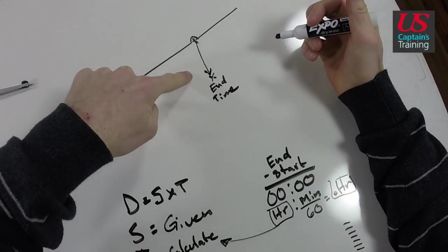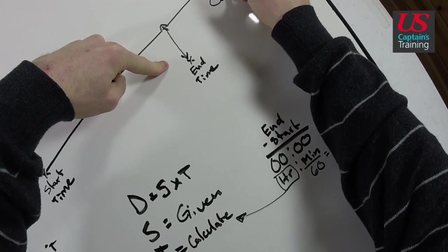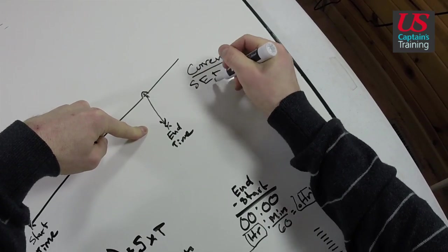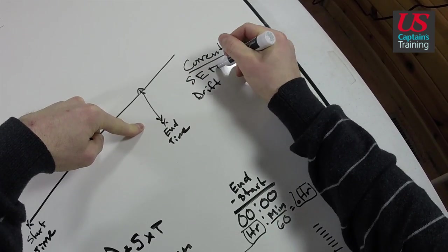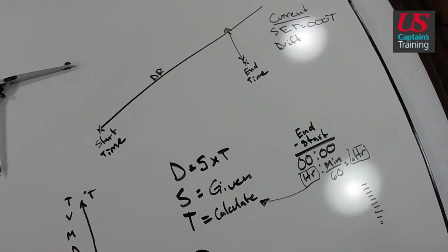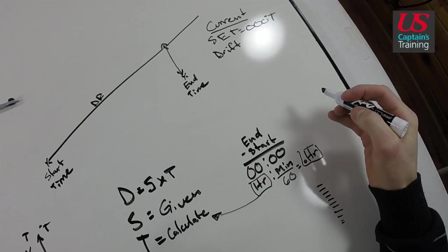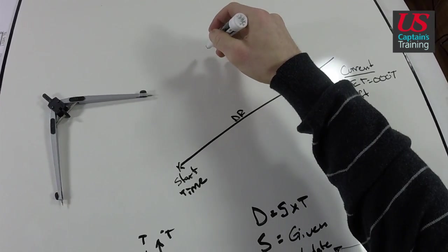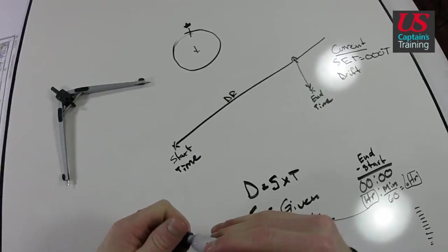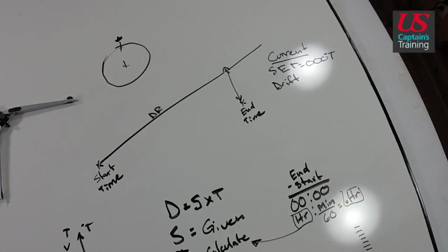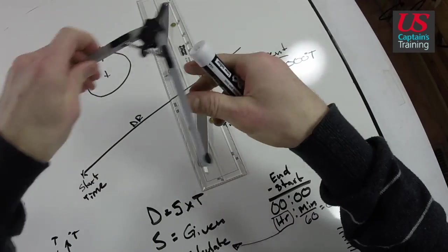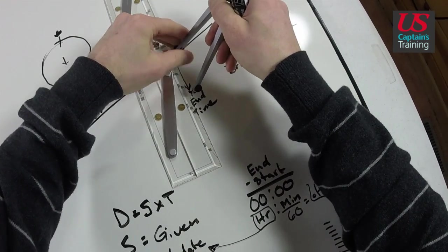What happened? A current acted on you. A current has two components: set and drift. Set equals degrees true. To find the set of the current, we go to the compass rose. There's the center, here's true north. We line up our parallel rules - I like to do this as a shortcut and it helps make you accurate.